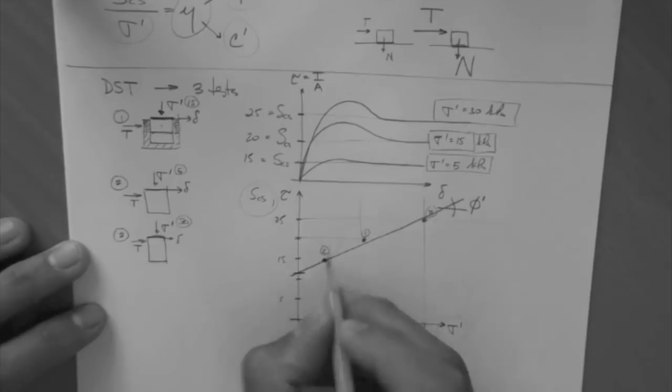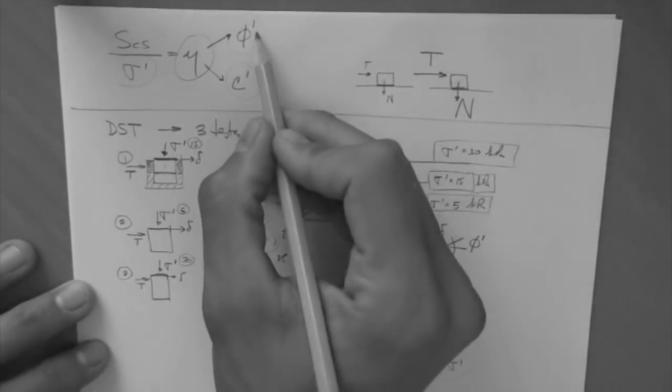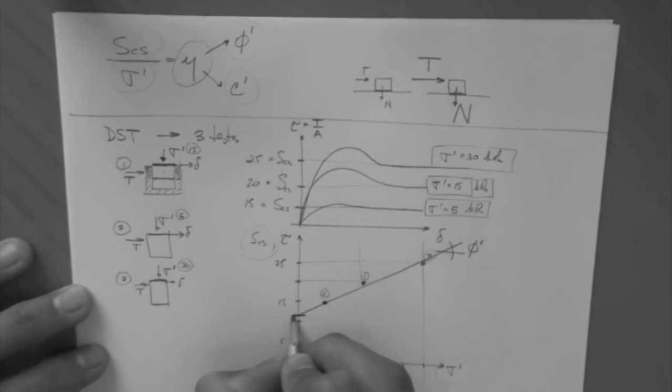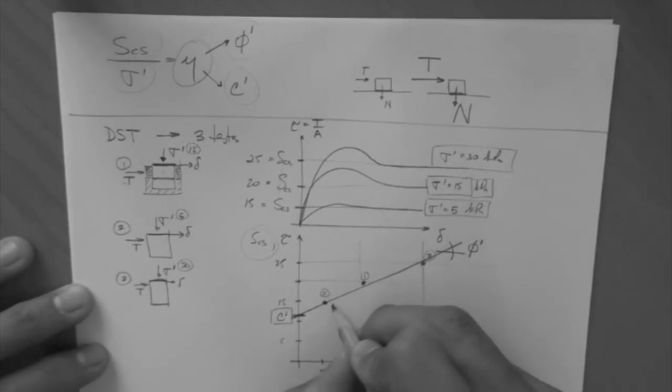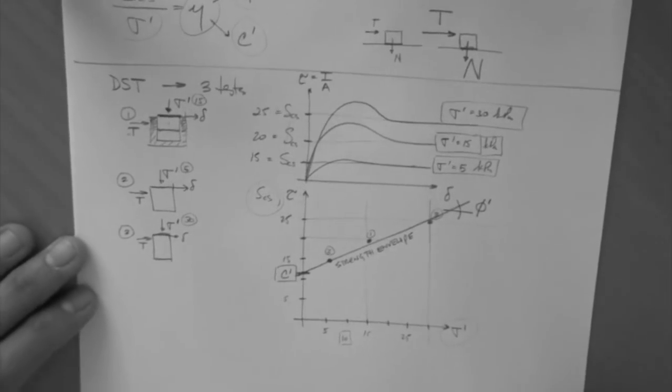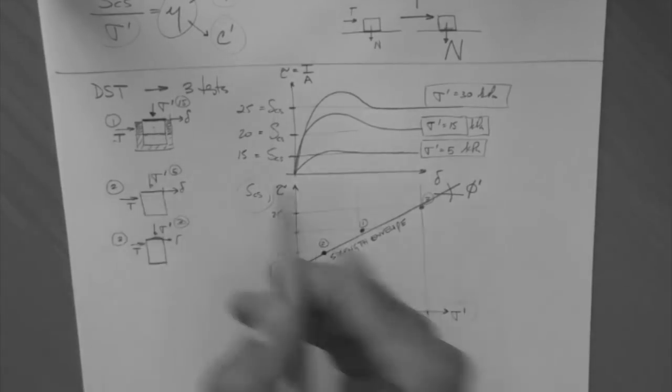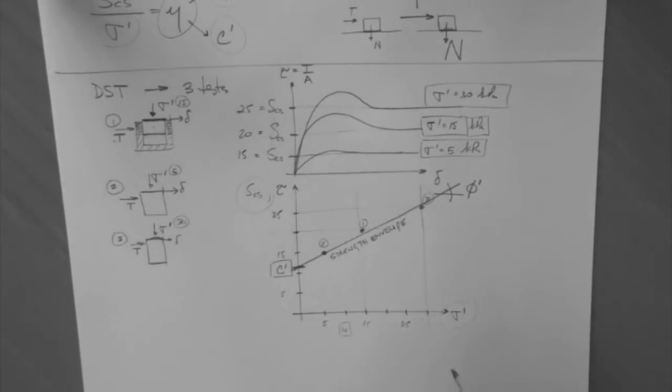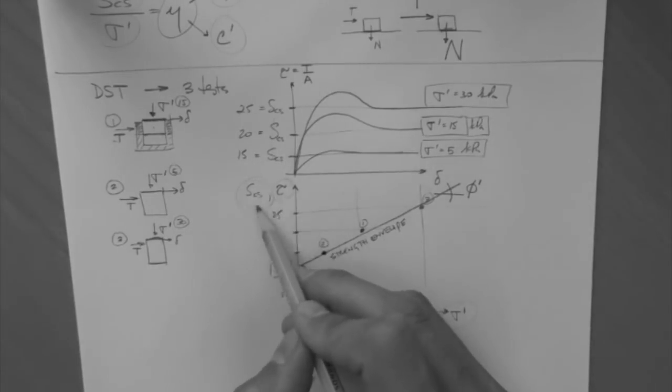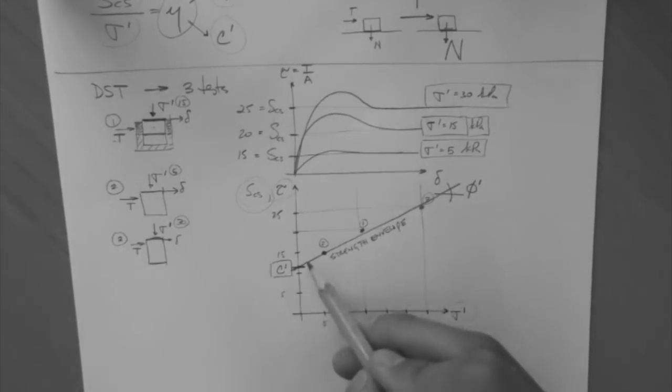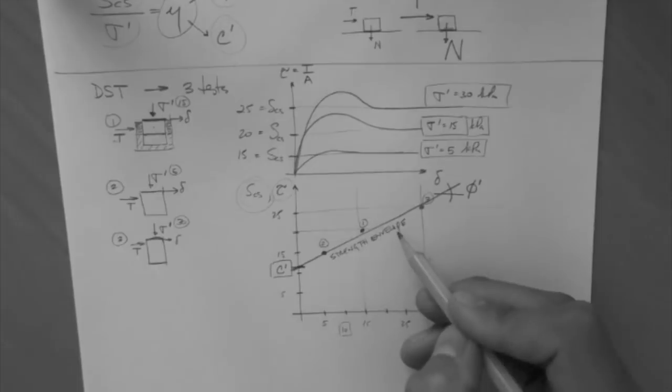This angle is phi prime. So this is an angle. And this intercept here, this value, is called c prime. And c prime is a tau. It is a strength, actually. Because it's on the strength envelope. Strength envelope. The strength envelope is the relationship between the stress, effective, that acts on a failure plane, and the stress, maximum stress that can be sustained there, which is the strength. So this line is the relationship. That's what we're looking for. And of course, the relationship is described by phi prime and c prime.